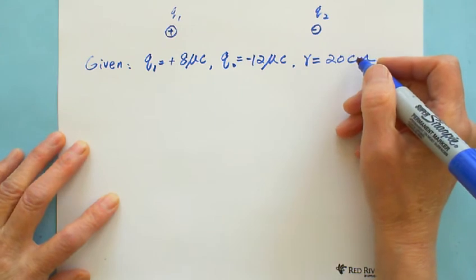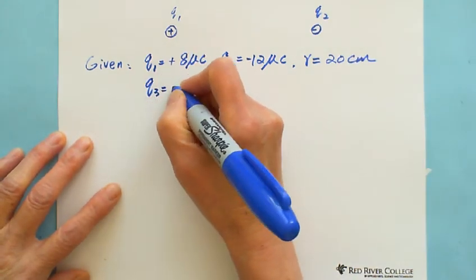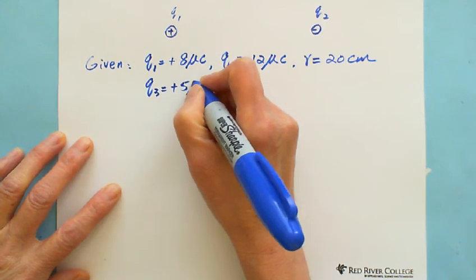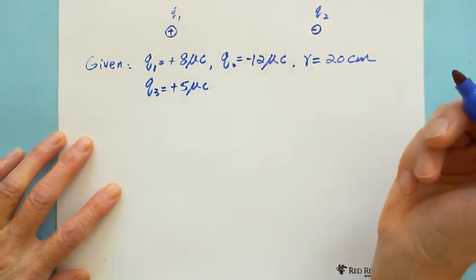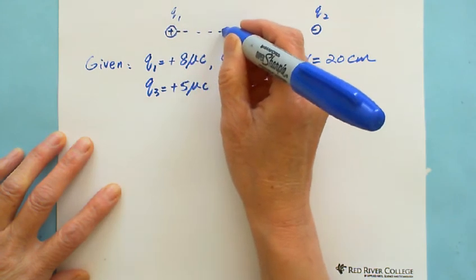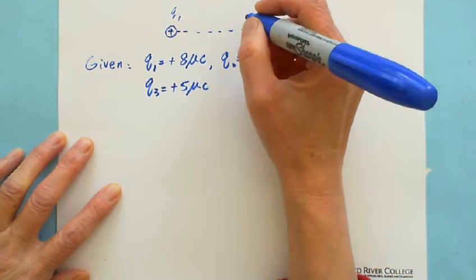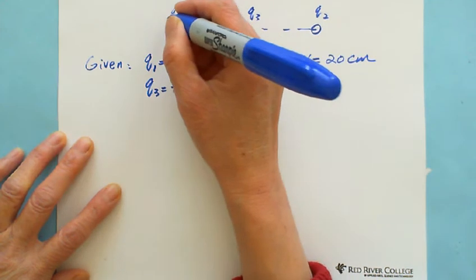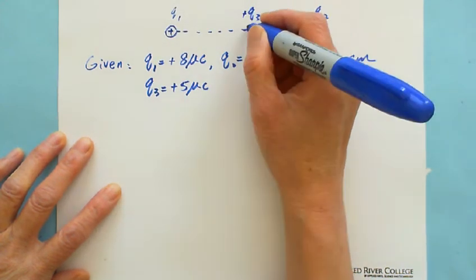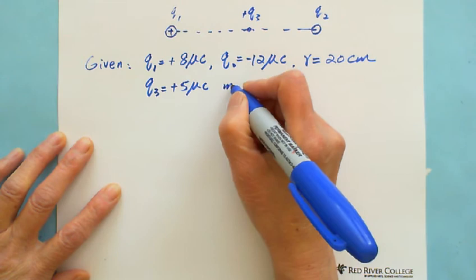And there is another charge Q3 with positive 5 microcoulombs put in the middle way of Q1 and Q2. This is in the midpoint.